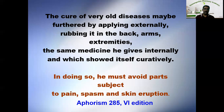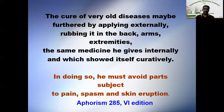The next indication is the cure of very old diseases, which may be furthered by applying medicines externally — rubbing them in the back of the arms or extremities. Otherwise, the same medicine given internally may have shortened its curative action. This is suggested by Hahnemann in Aphorism 285 of the 6th edition, where the administration of medicines over the skin is used as a route of administration — not a true external application, but similar to oral, nasal drops, eye drops, or inhalations. The skin can also be used as one of the routes of administration of medicine, which is one of the unique observations of Hahnemann.